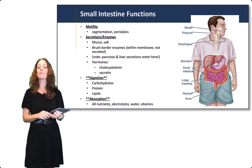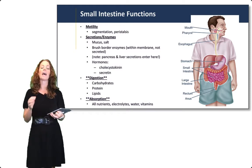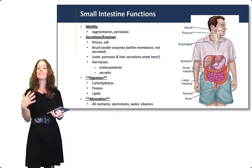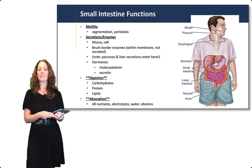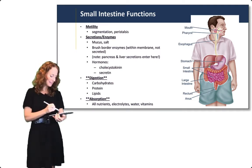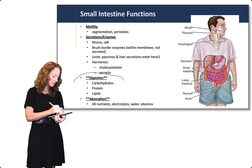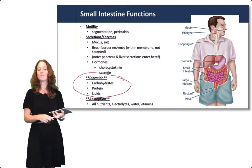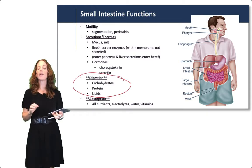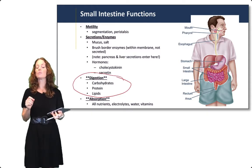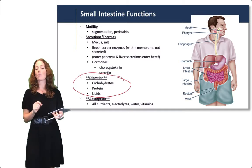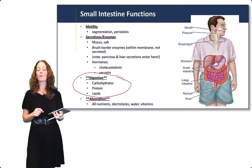We will have a whole separate lecture on the pancreas and the liver. What digestion happens in the small intestine? Everything! The small intestine is the major site of digestion. Everything is digested here — carbohydrates, proteins, lipids, and any other large molecules getting broken down into small molecules.